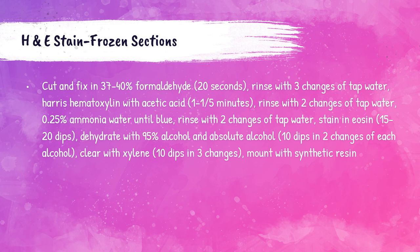Frozen sections can be stained with the H&E stain. The procedure is: cut the frozen section and fix in 37–40% formaldehyde for 20 seconds; rinse with three changes of tap water; apply Harris hematoxylin with acetic acid for 1 to 1.5 minutes; rinse with two changes of tap water; add 0.25% ammonia water until the solution turns blue; rinse with two changes of tap water; stain in eosin — about 15 to 20 dips; dehydrate with 95% and absolute alcohol at 10 dips for two changes of each; clear with xylene in three changes at 10 dips per change; then mount with a synthetic resin.